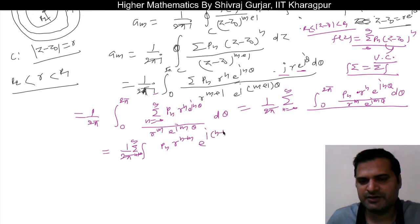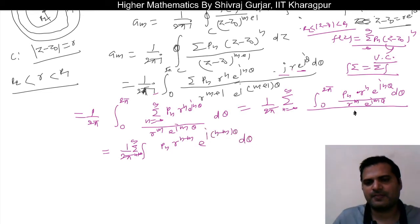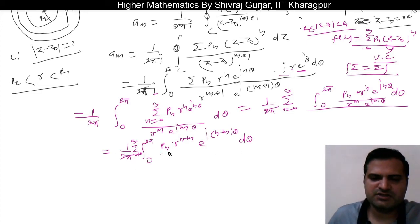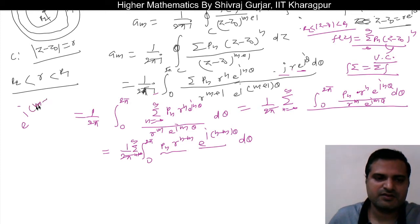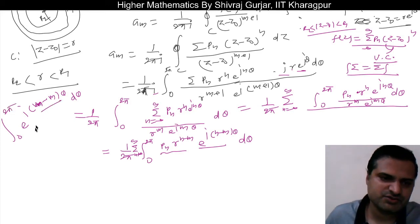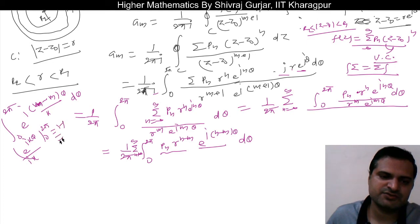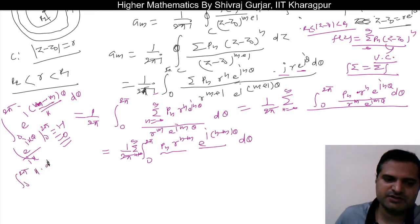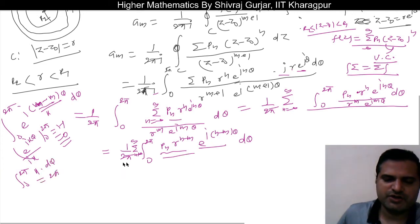Now, with respect to θ, the terms pn and r^(n-m) are constants. We need to evaluate the integral from 0 to 2π of e^(i(n-m)θ) dθ. Since n - m is an integer, let k = n - m. The integral of e^(ikθ) from 0 to 2π equals 0 when k is a nonzero integer, and equals 2π when k = 0, i.e., when n equals m.